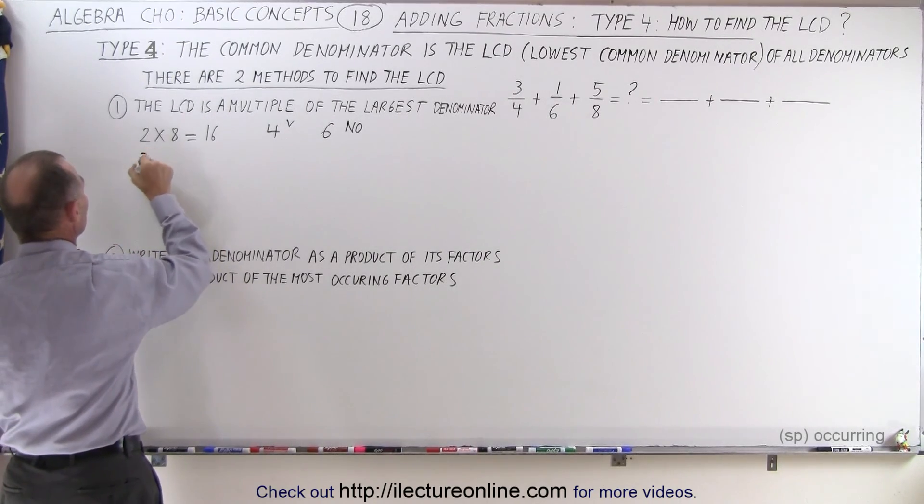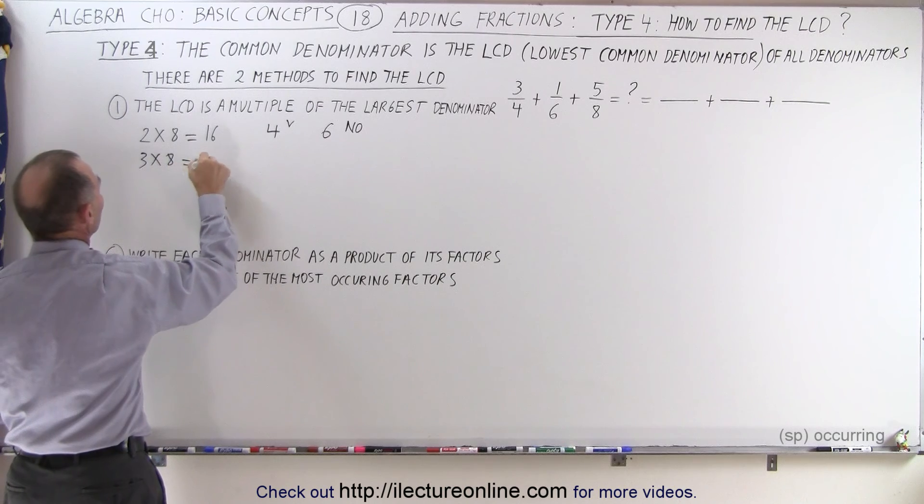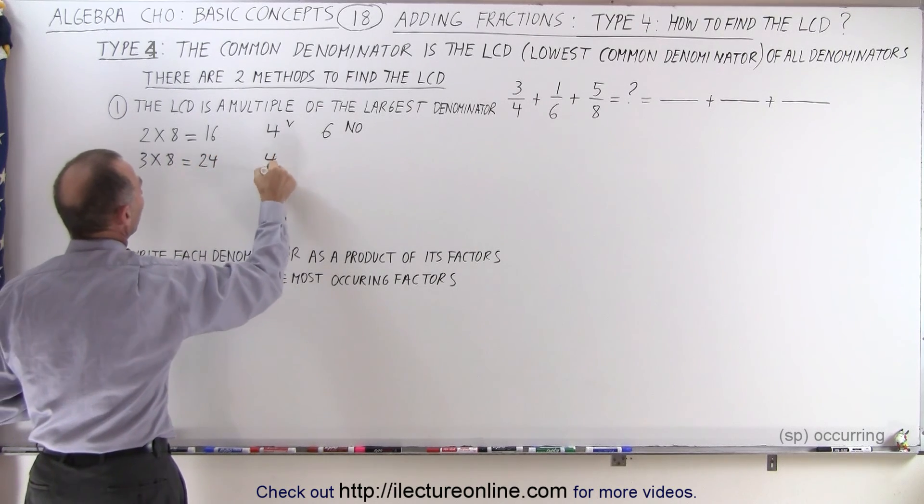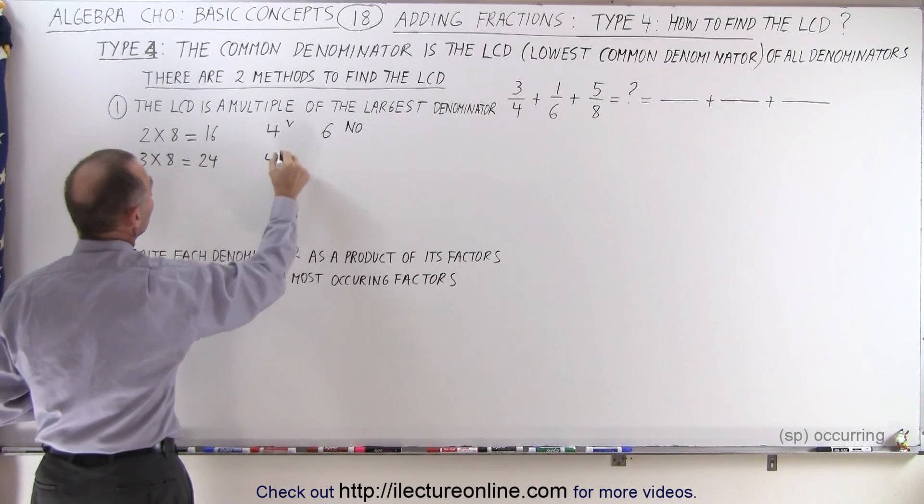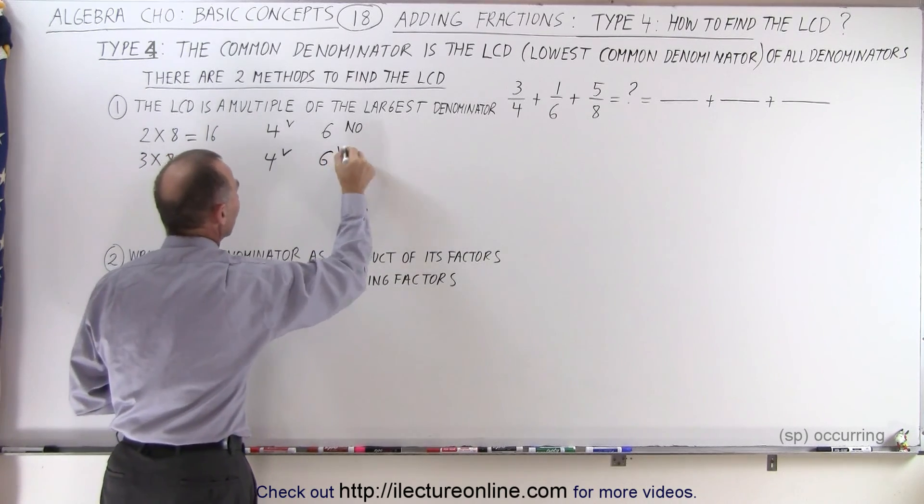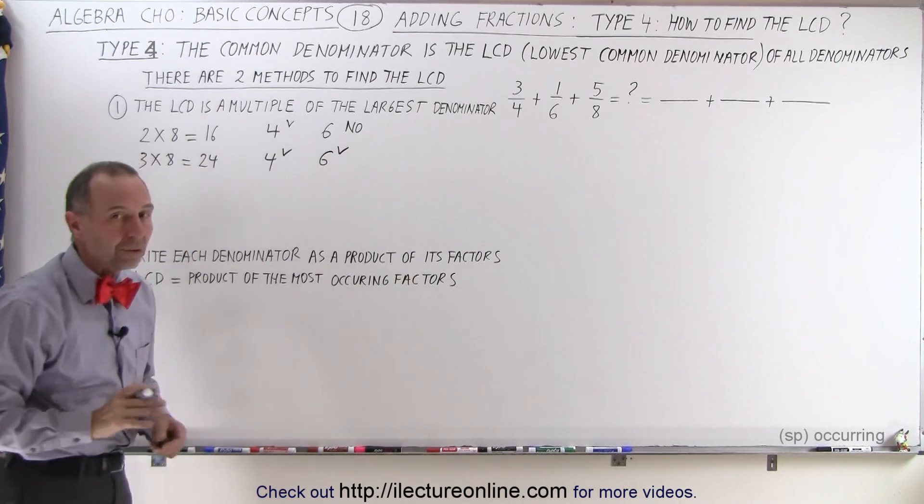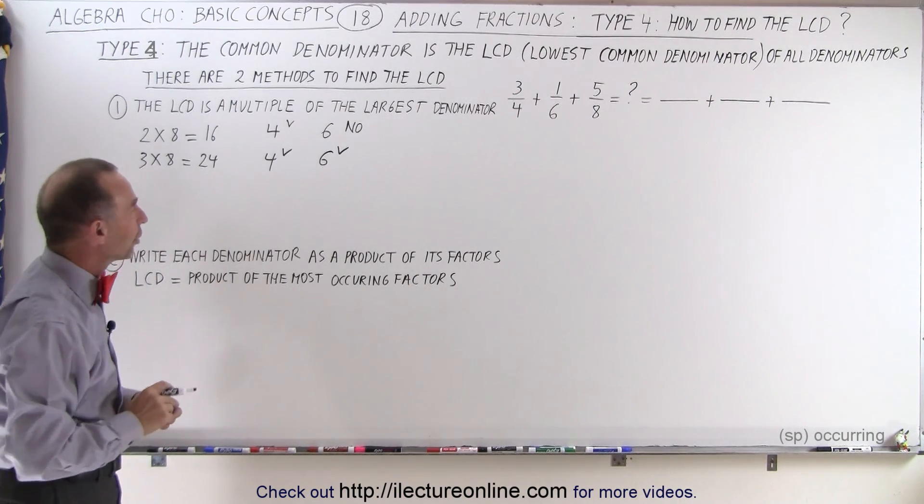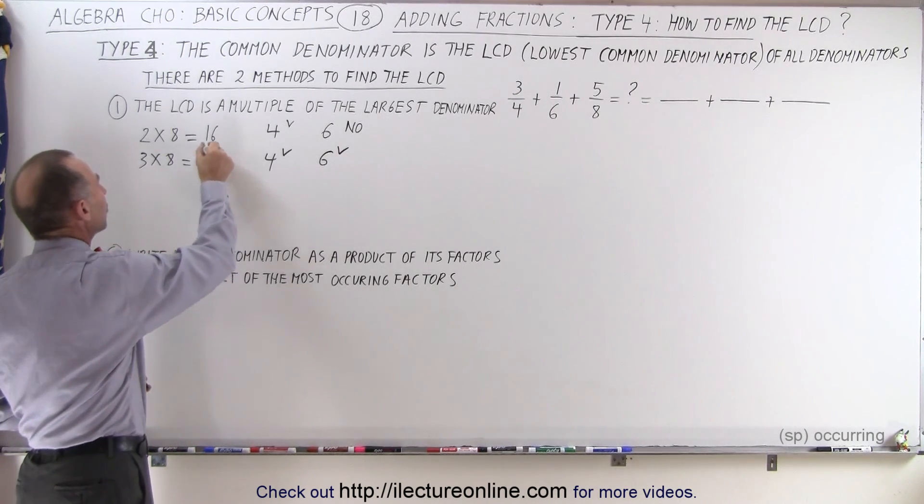So we try the next multiple, 3 times 8, which is 24. Does 4 fit evenly into 24? The answer is yes. Does 6 fit evenly into 24? The answer is yes. If both of them fit evenly into that multiple, then we have found the lowest common denominator, which is 24, which means that these three fractions will have a 24 as a denominator.